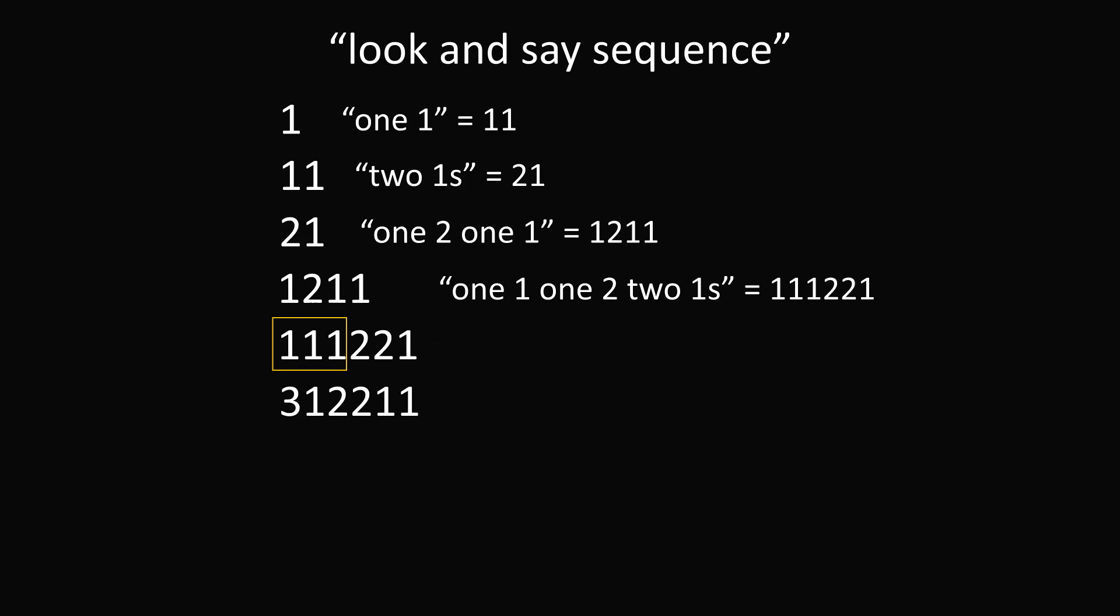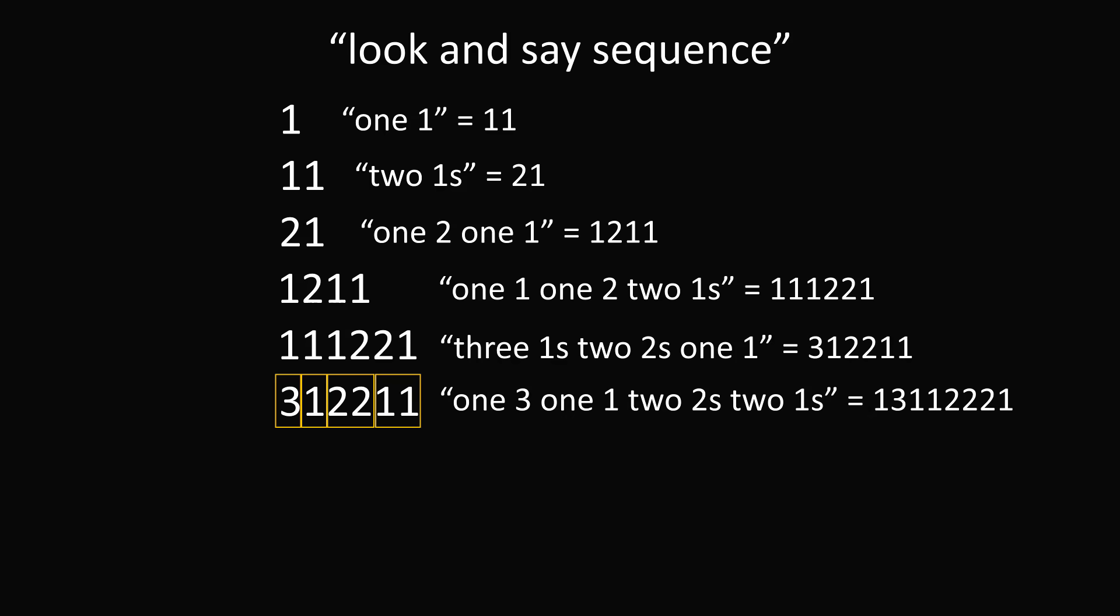So, we go ahead here. We have 3-1s, 2-2s, 1-1. This becomes 3-1, 2-2, 1-1. So, in order to get the next number in the sequence, we have 1-3, 1-1, 2-2s, 2-1s. This will be the next number, which is 1-3, 1-1, 2-2-2, 1, and that's the answer.